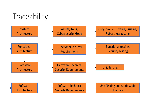The first input to the entire system is the system architecture, which must cover both security and non-security requirements. In simple words, the system architecture is the whole and soul of the product. From the system architecture, we identify the SRS, conduct TARA, and derive the cybersecurity goals. From those cybersecurity goals, we derive test cases for gray-box penetration testing, fuzzing, and robustness testing.